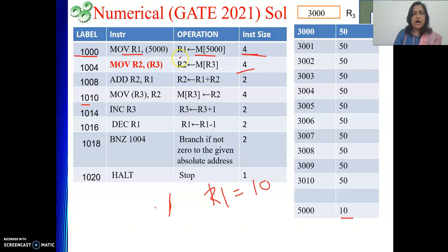Then next is move R2, whatever is the content of R3. R3 is holding 3000, and at 3000 we have the value 50. That is being moved to R2. So R2's content is 50.